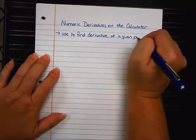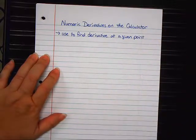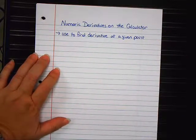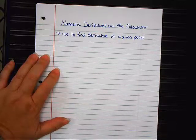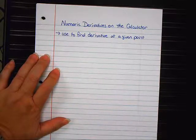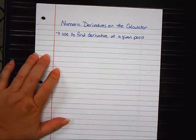Now, these numeric derivatives mean that you can use it to find the derivative at a given point. It will not find the derivative equation for you. It will not do the product rule for you and the quotient rule for you and say what it is in terms of x. It will only find the derivative at a specific point.